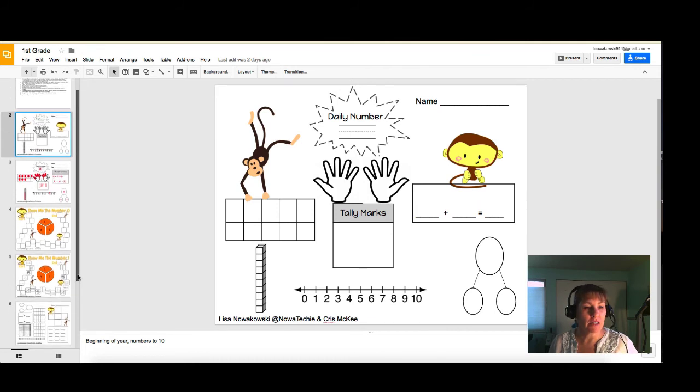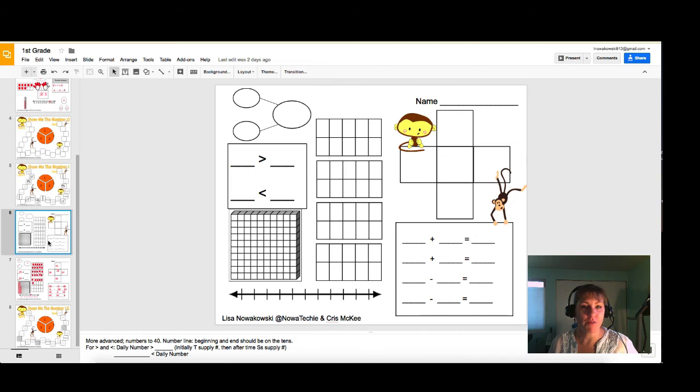For more advanced features we have show me the numbers 1.5. This is a little bit later on in the year where the students will use numbers up to 40. You'll see that we have the number bonds still here. We've added greater than less than. We have our hundreds. We still have our number line. We have our tens frame. Now we have four of them.